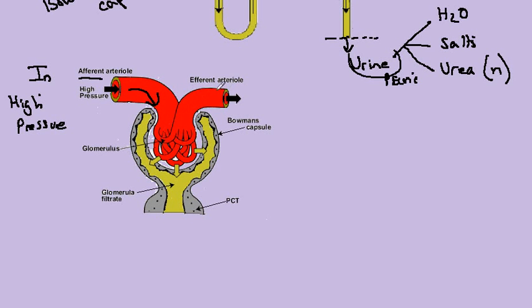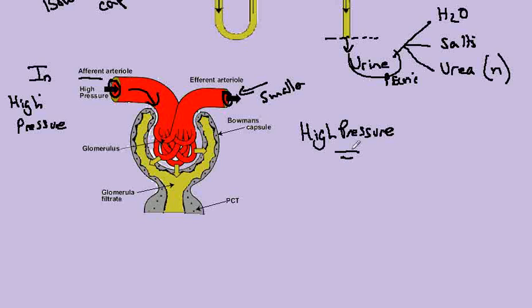Now the next feature to note is the blood vessel coming out of the Bowman's capsule, this one here. Notice that the diameter of this blood vessel here is smaller. So we've got a wide blood vessel here and a narrow blood vessel here. As blood flows through and into here, the consequence of this is that it develops a high pressure. So the blood pressure increases in the glomerulus.